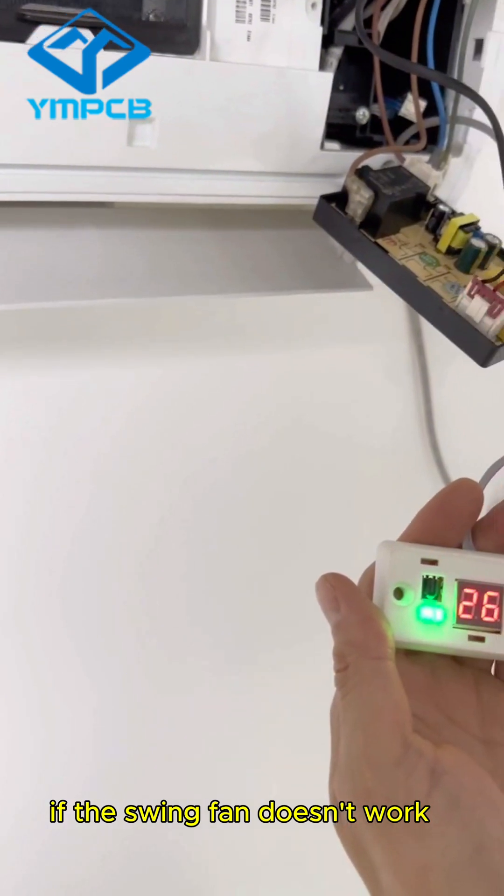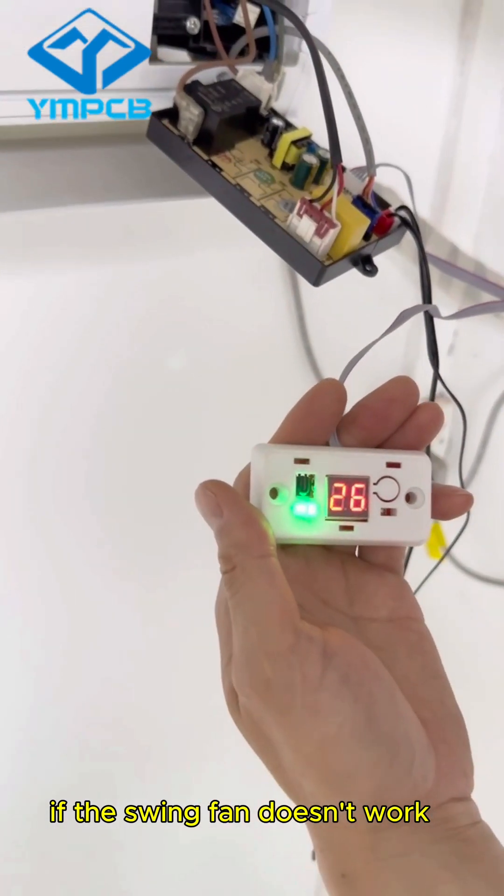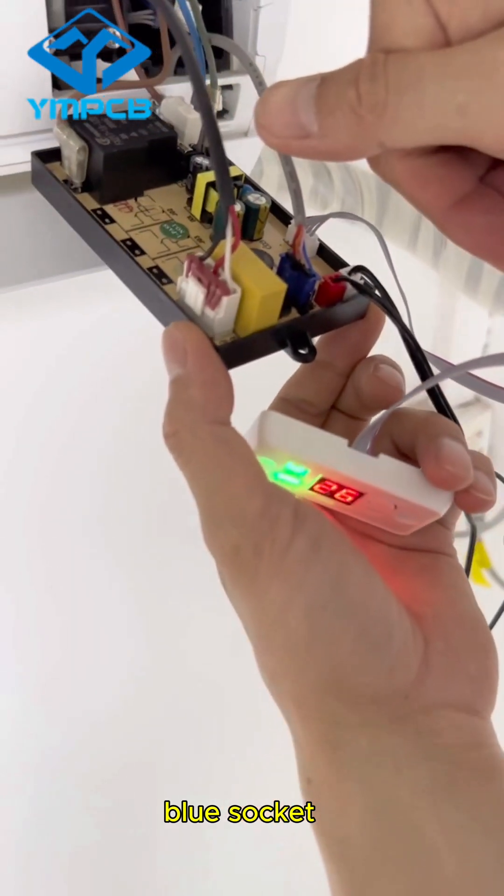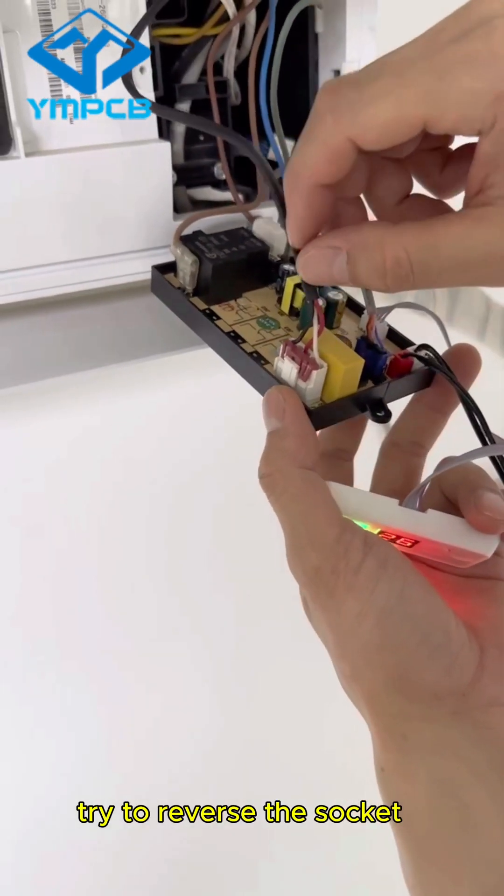If the swing fan doesn't work, you can check the blue socket. Reverse. Reverse the socket.